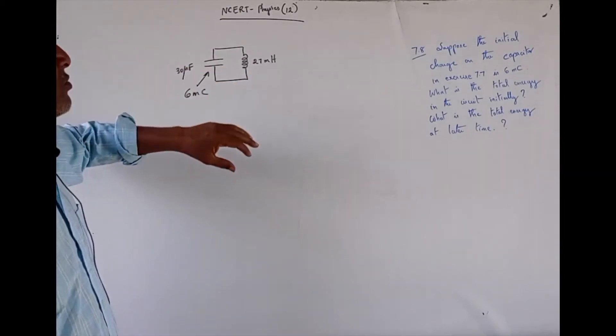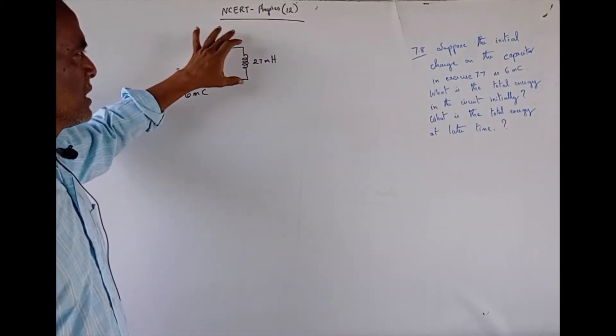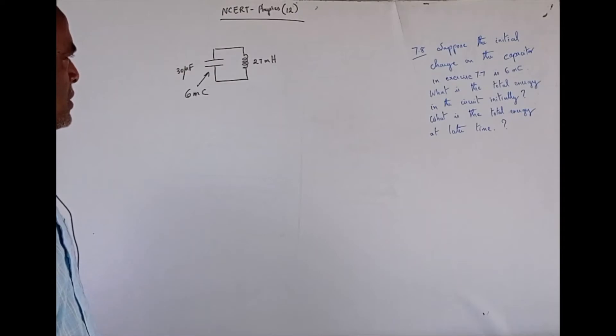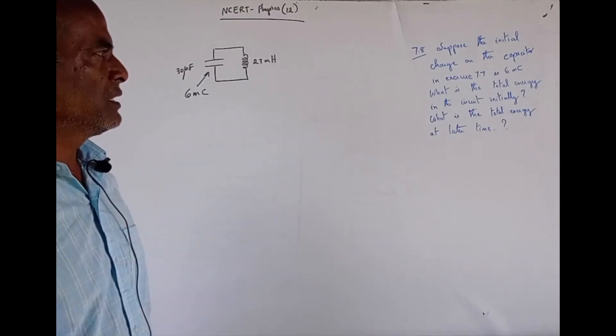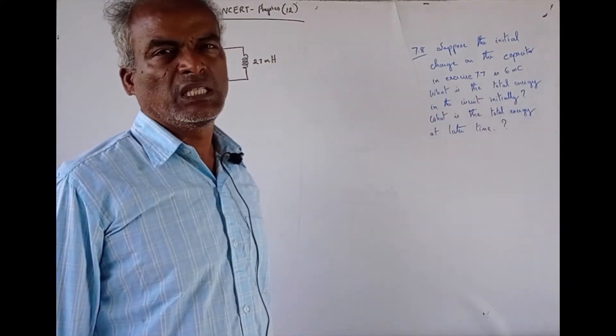And the previous problem, you know, the 30 microfarad capacitor is connected to 27 millihenry. Now, the question is, what is the total energy in the circuit initially?